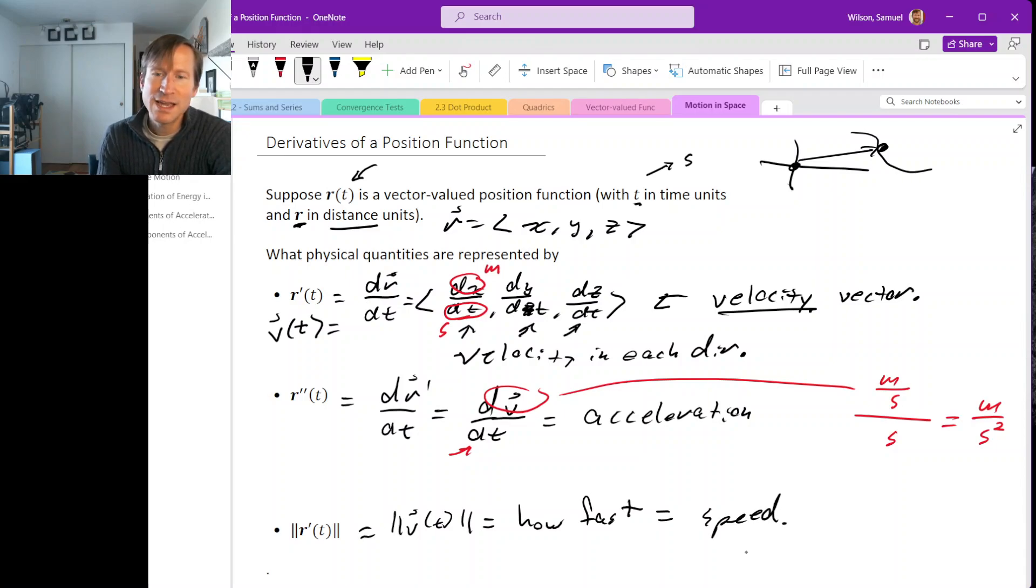You're probably tempted to write s(t), but we will not write s(t) for speed, because s means something else that we will see soon. So when we want to write speed, we'll usually just write magnitude of r-prime, or magnitude of v.